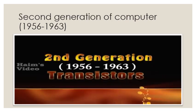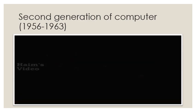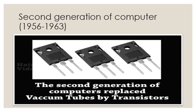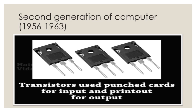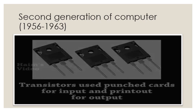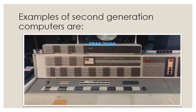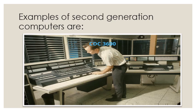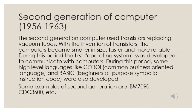The second generation of computers was from 1956 to 1963, and its main component was the transistor. The second generation replaced vacuum tubes with transistors. Transistors used punch cards for input and printouts for output. With the invention of transistors, computers became smaller in size, faster, and more reliable.